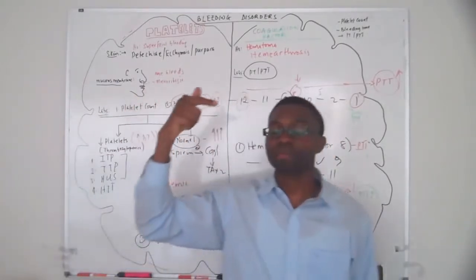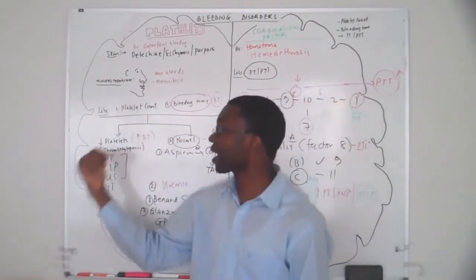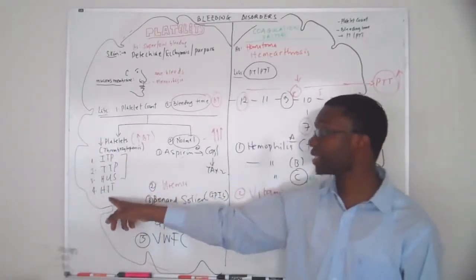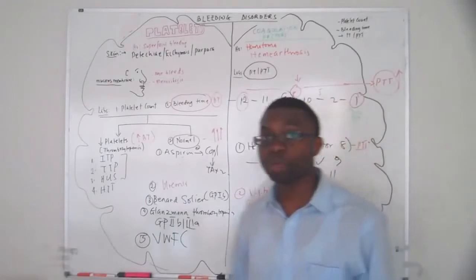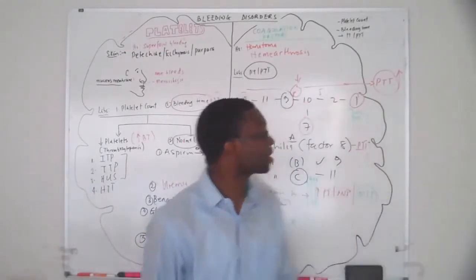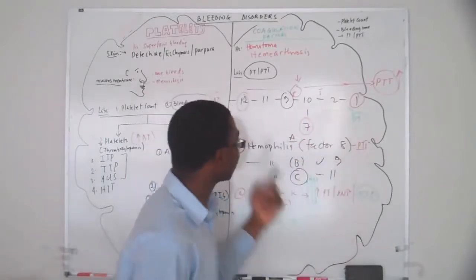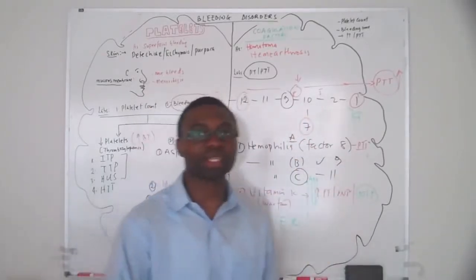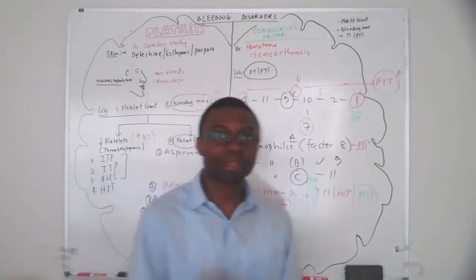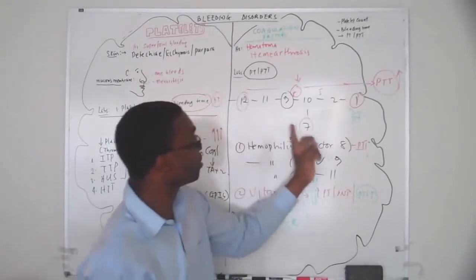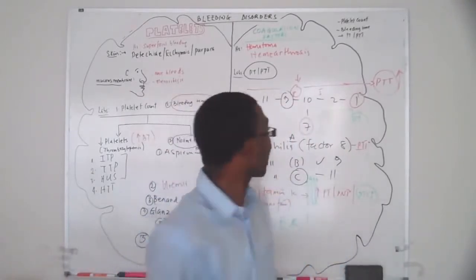Platelet problems: ecchymosis, purpura, petechiae, nosebleeds, menorrhagia. Get a platelet count — if low, think ITP, TTP, HUS, HIT. If normal, think aspirin, uremia, Bernard-Soulier, Glanzmann, or von Willebrand. Switch brain to coagulation factors: think hematoma, hemarthrosis, coagulopathy. Look at the clotting cascade. Hemophilia: factor VIII out — usually males. Hemophilia B is factor IX, hemophilia C is factor XI. Vitamin K deficiency: PT is high. Liver problems: PTT and PT are both high. That is it.